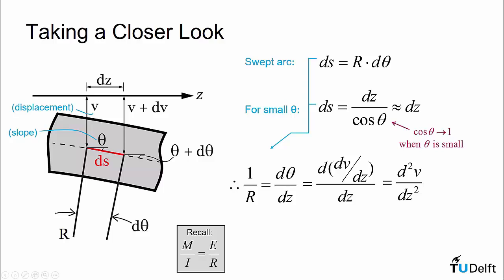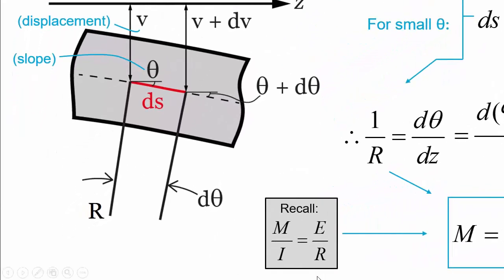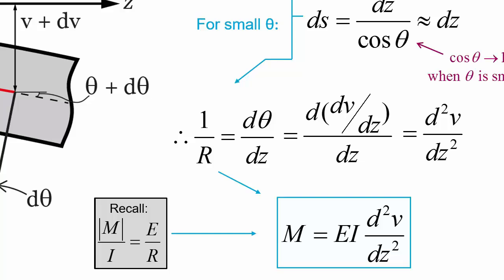A link to this past video is provided in the top right corner of this video. If we combine this with our previous results, we see that the bending moment is equal to the flexural rigidity EI multiplied by the second derivative of the vertical deflection. Now, we have to be slightly careful here. If we look at the equation in the gray box, we have a small issue. The moment M can be either positive or negative according to our sign convention, but I, E, and r are all positive scalars. Thus, the equation should actually include absolute value signs around the moment term.